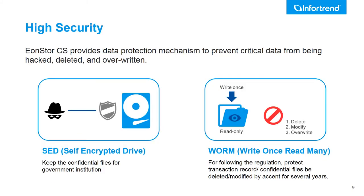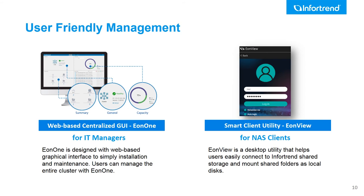For data security, EonStore CS provides SED and WORM features to prevent critical data from being deleted or overwritten. EonStore CS also offers an embedded management suite for IT managers, called Eon1, for Cluster Centralised Management. For the client-side utility, InfraTrend also provides EonView to help users easily deploy.